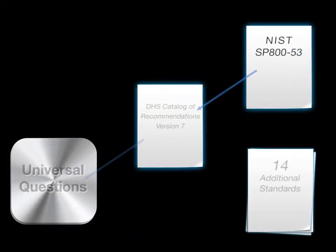Fourteen additional standards, besides NIST SP 800-53, were used to evaluate questions in the Catalog of Recommendations in order to add missing controls or remove those that might not have been applicable.